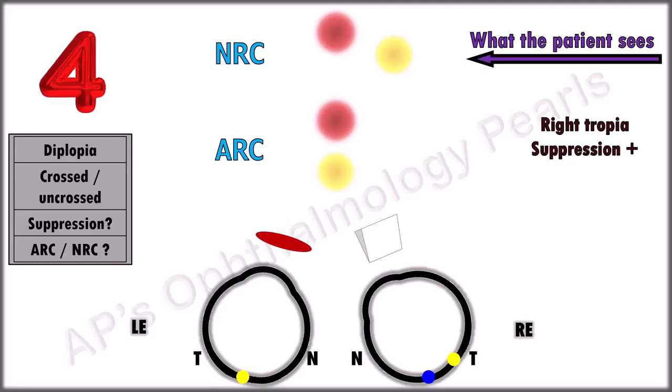Here the vertical deviation is due to the prism. However, the pseudofovea of the deviated eye now has the same visual direction as the true fovea of the fixing eye. So there is no lateral displacement.